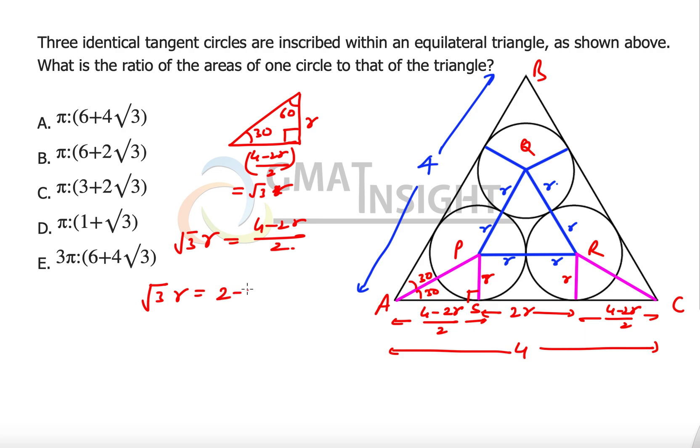Now we simply have to simplify this expression. It becomes 2 minus r, that means r times root 3 plus 1 is equal to 2, so r becomes equal to 2 divided by root 3 plus 1.